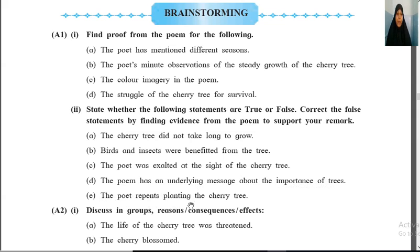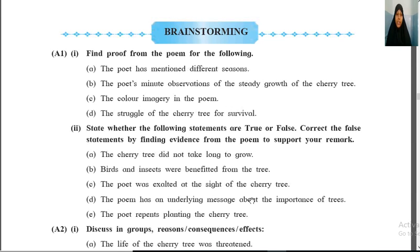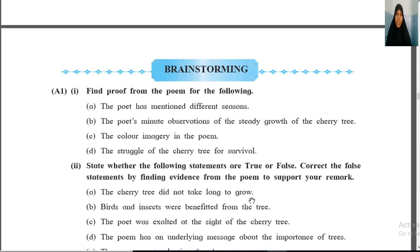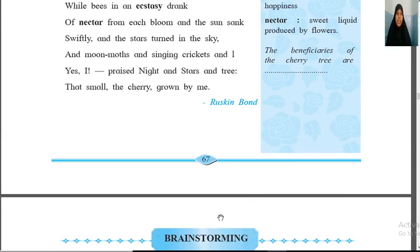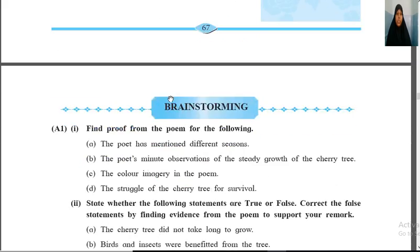The statement 'the poet repents planting the cherry tree' is false — he doesn't repent. On the other hand, he is very happy. The last line: 'Yes, I praise knights and stars and tree, that small cherry tree grown by me.' He is very proud that he has grown the small sapling into a tree.